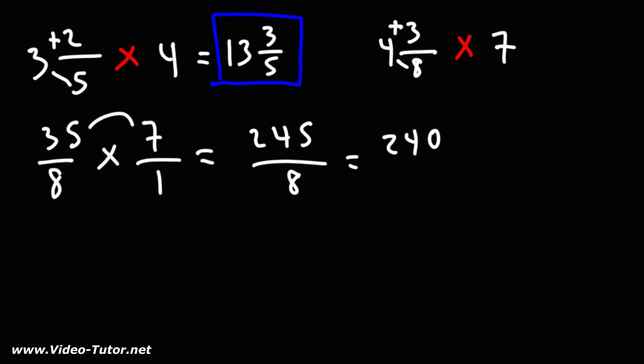The highest multiple of 8 just under 245 is 240, because if 8 can go into 24, 8 can go into 240. So we could break up 245 into 240 plus 5.